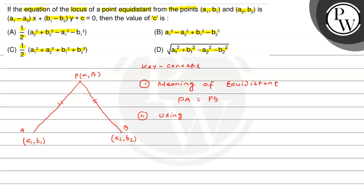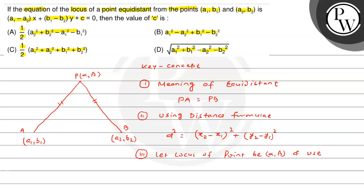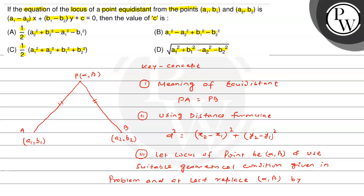Problem solve करने के लिए key concepts: distance formula — d² = (difference of x-coordinates)² + (difference of y-coordinates)². और locus of point को alpha, beta मान लेते हैं। Let locus of point be (alpha, beta), and use suitable geometrical condition given in problem, and at last replace alpha, beta by x, y.